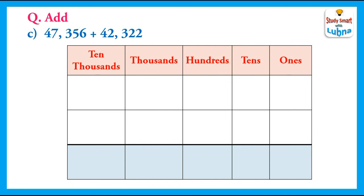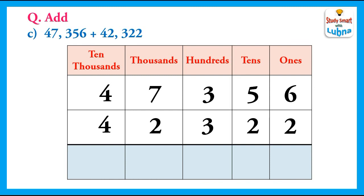One more example: now we have to add 47,356 and 42,322. We will write these five-digit numbers below their place values and add them one by one. Ones: 6 plus 2 equals 8. Tens: 5 plus 2 equals 7. Hundreds: 3 plus 3 equals 6. Thousands: 7 plus 2 equals 9. Ten-thousands: 4 plus 4 equals 8. So the answer is 89,678.